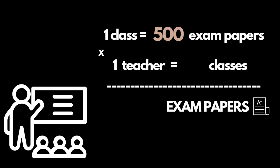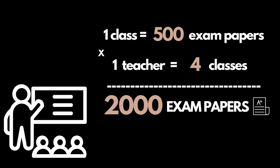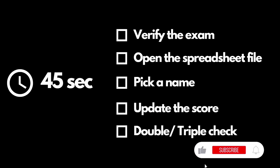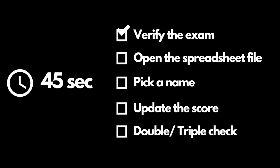The education system is outdated. Every class in Vietnam has at least 500 exam papers every semester. Each teacher has around 4 classes, which means they must grade approximately 2,000 exam papers per semester. If we assume 45 seconds to verify each exam, open a spreadsheet, pick a name, and update and double-check the score, it'll take around 1,500 minutes of continuous work — time spent on things that have no effect on education.